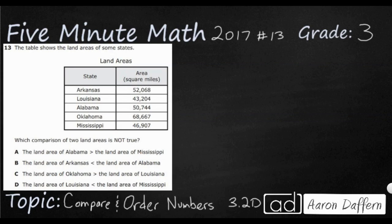Hello and welcome to 5-Minute Math. Today we are looking at the third grade concept of comparing and ordering numbers. This is standard 3.2D in Texas, and we will be using item number 13 of the 2017 STAAR test.